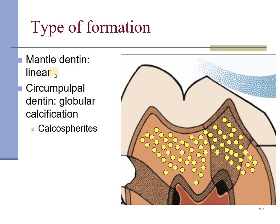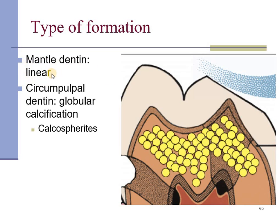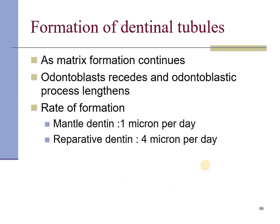The mantle dentine shows linear mineralization, whereas the circumpulpal dentine shows globular mineralization in the form of calcospherites. The dentinal tubules continue to form at a rate of 1 micron per day. Reparative dentine, however, can form much faster — up to 4 microns per day — and the speed may also incorporate odontoblasts, leading to osteodentine formation.